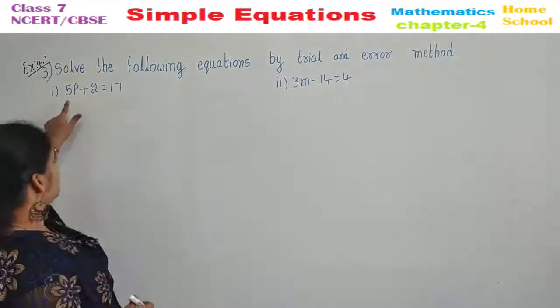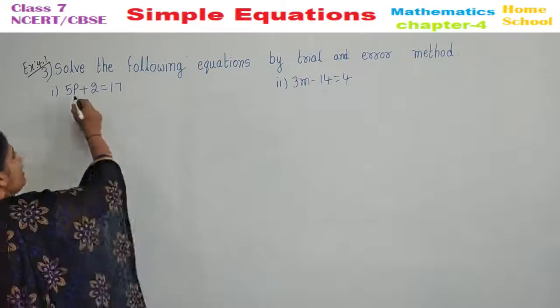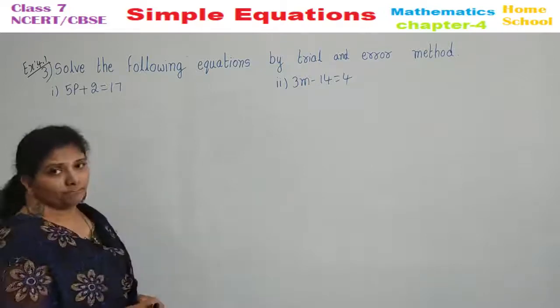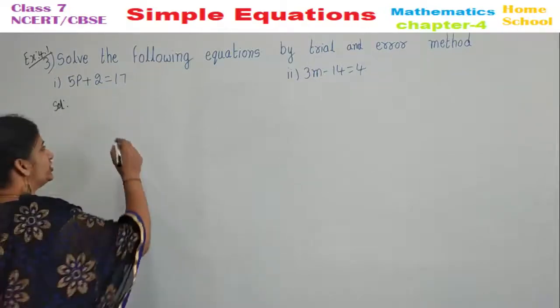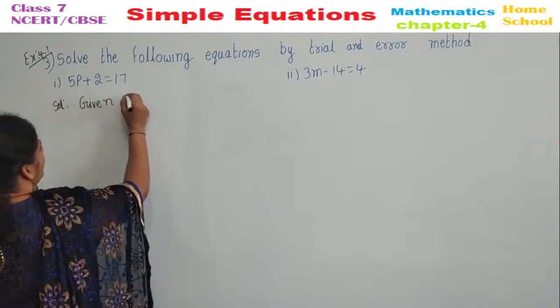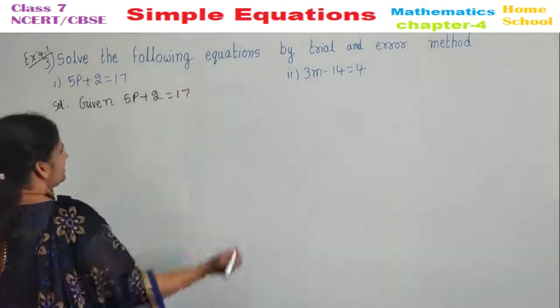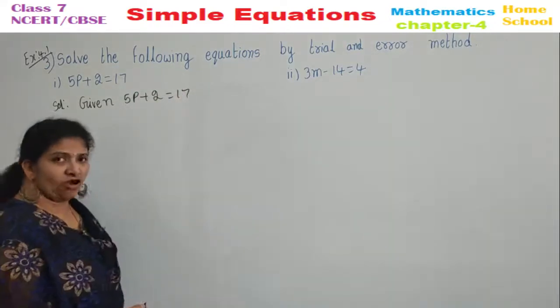Look here first problem. 5P plus 2 equal to 17. We need to find the value of P. We start our solution with the given equation. We write again. Given 5P plus 2 equal to 17. We need to find the value of P.